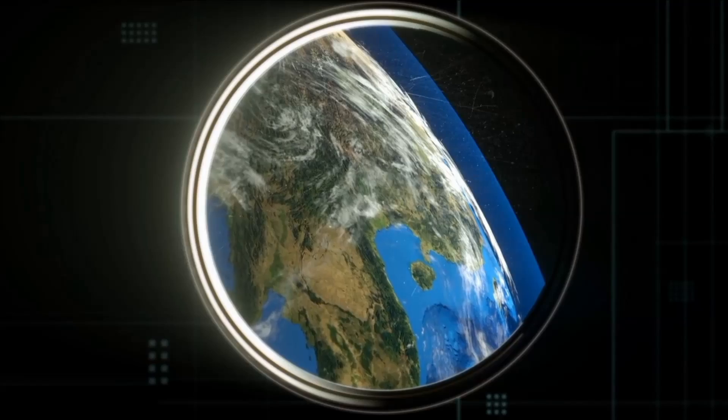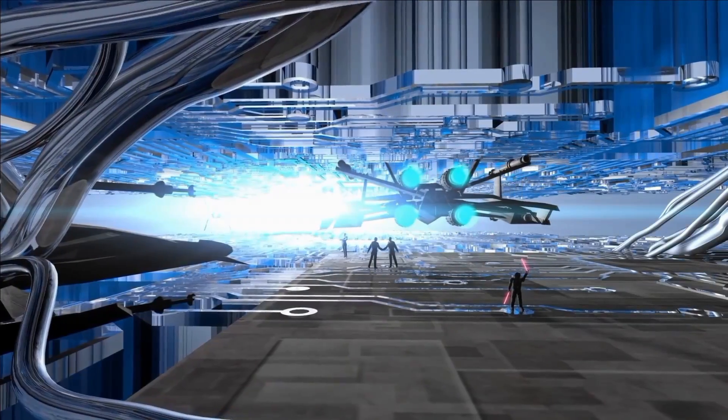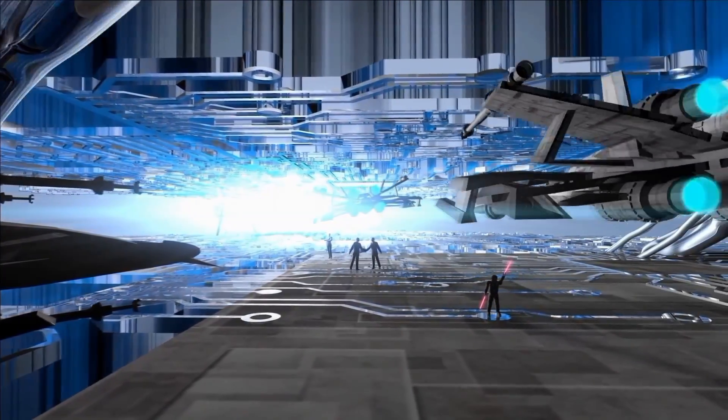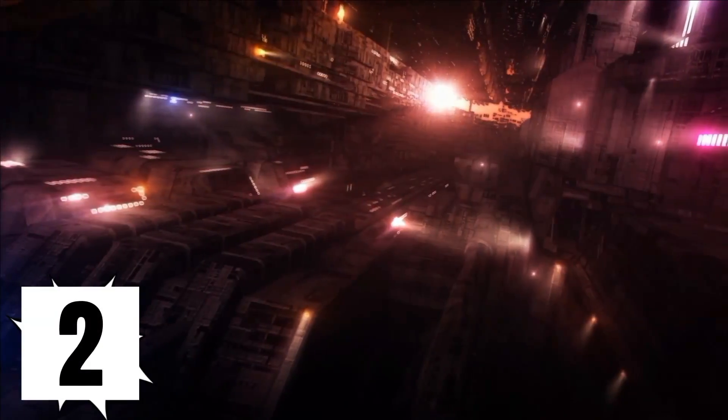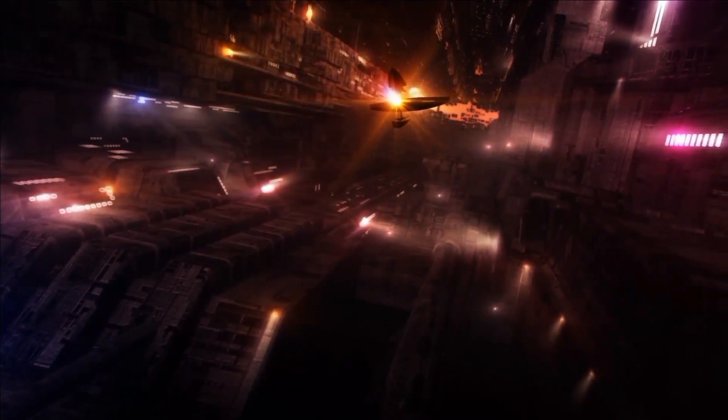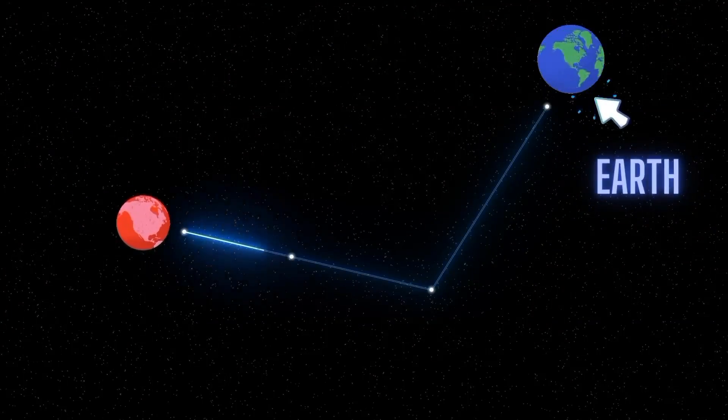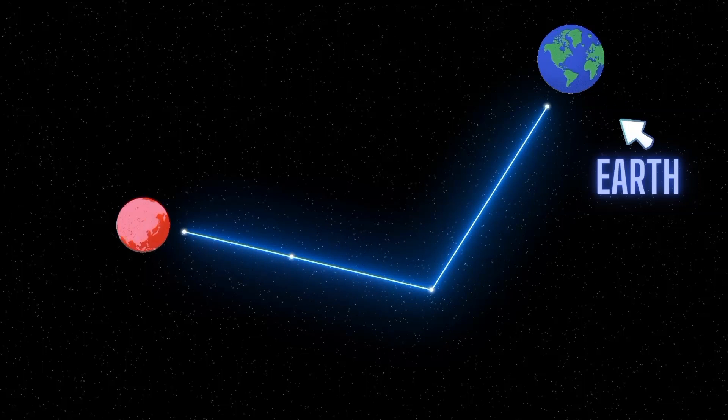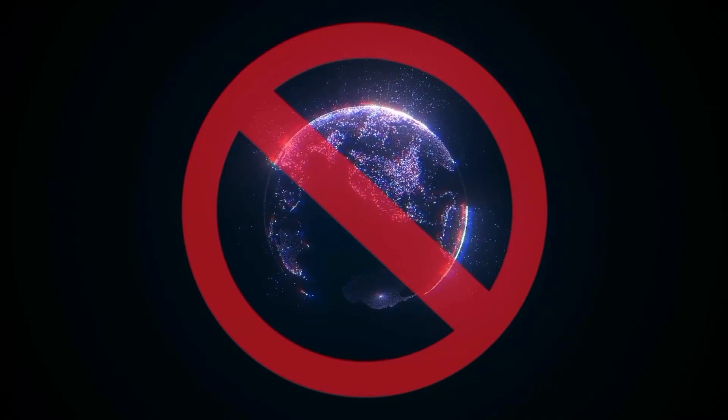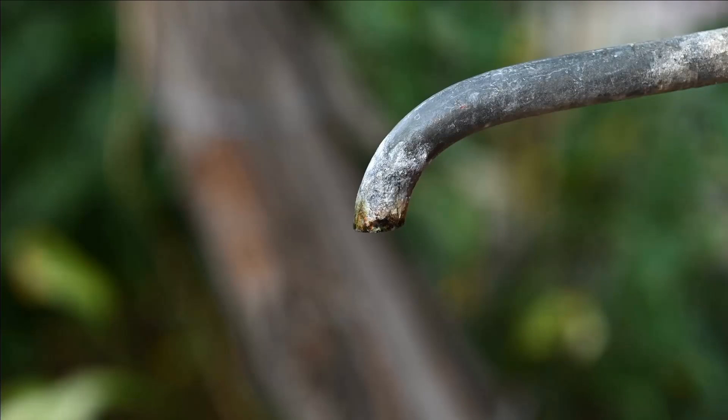One: Aliens have never visited Earth because of a physical obstacle that makes space travel infeasible. Two: Advanced civilizations outside Earth had only recently emerged, making it impossible for aliens to reach us. Three: Aliens just decided not to come to Earth. Maybe they think we are stupid or don't have enough natural resources.